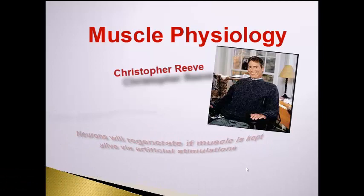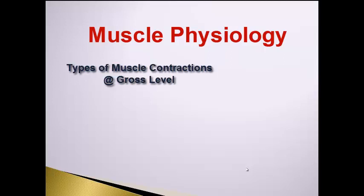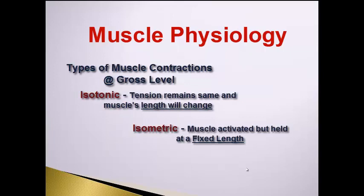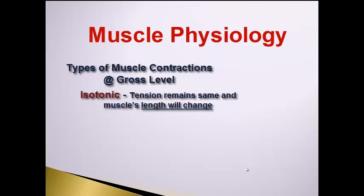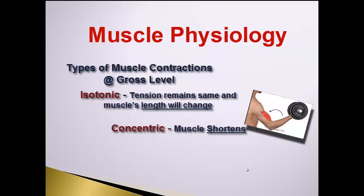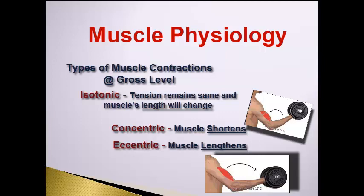The other thing to cover is the types of contractions. There are two types associated with gross skeletal muscle contractions: isotonic and isometric. Isotonic contractions produce a uniform tension in the muscle once a load has been overcome, resulting in movement at the joint and a change in length — like doing a curl with your arms. There are two subtypes: concentric isotonic contractions generate forces that shorten the muscle, whereas eccentric contractions result in lengthening the muscle.